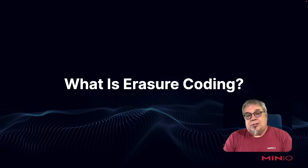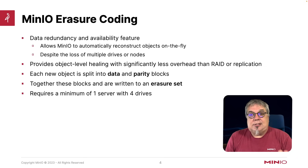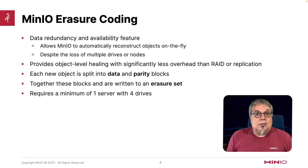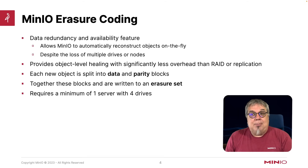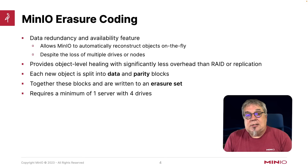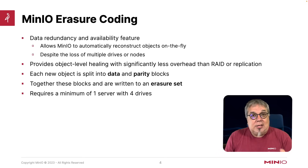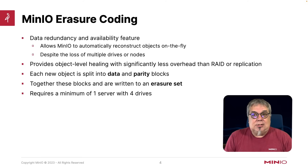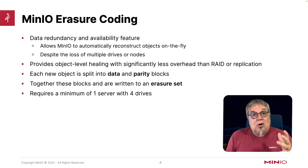So what is Erasure Coding? Erasure Coding is data redundancy and availability. It makes sure that MinIO can automatically reconstruct objects on the fly. This is useful if you lose a drive, multiple drives, or even a node out of your cluster. MinIO Erasure Coding is designed to allow you to reconstruct lost data, giving us object-level healing with significantly less overhead than RAID or replication because it's all built into the system. The way it works is each new object is split into a number of data and parity blocks, which are then written to an Erasure Set.